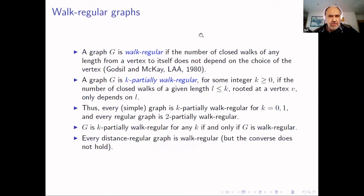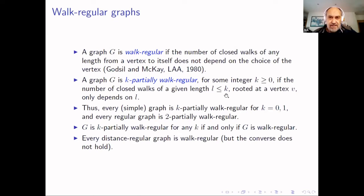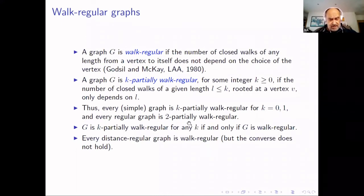We also use this other notation. For the minimum of a given polynomial at the mesh, setting the spectrum radius, we denote Lambda of p as the minimum value of the polynomial at the mesh. We use the concept of walk-regularity, introduced by Godsil and McKay. A graph is walk-regular if the number of closed walks of any given length from a vertex to itself does not depend on the choice of the vertex.